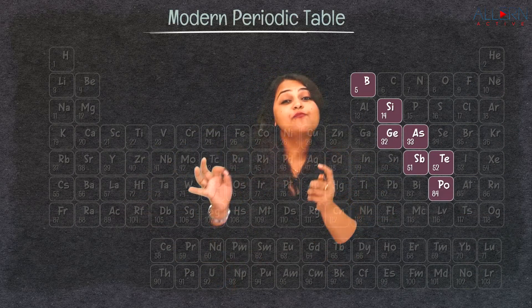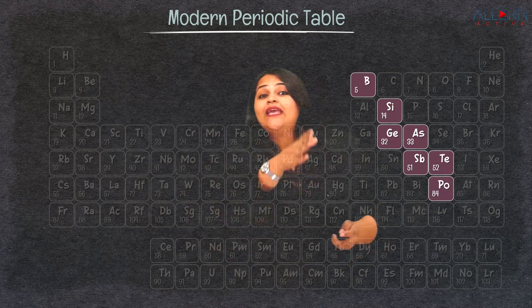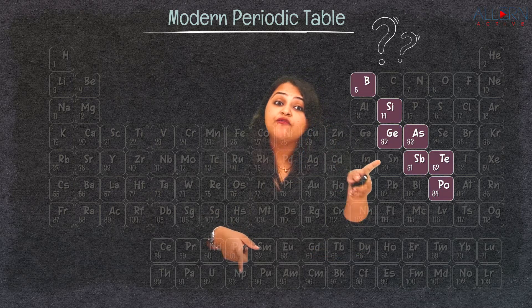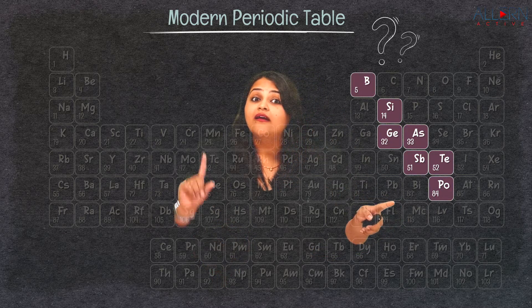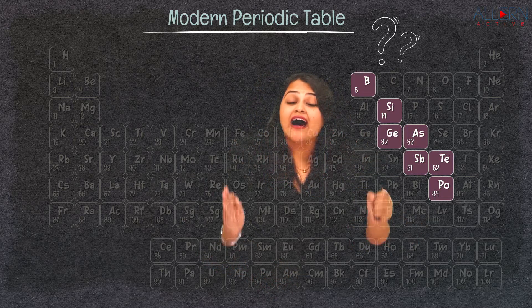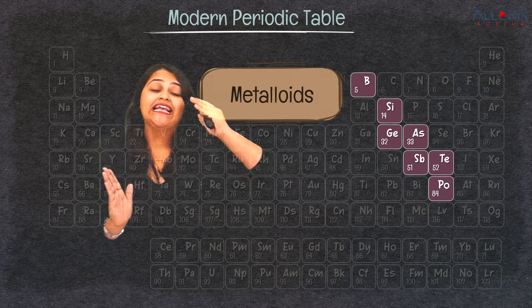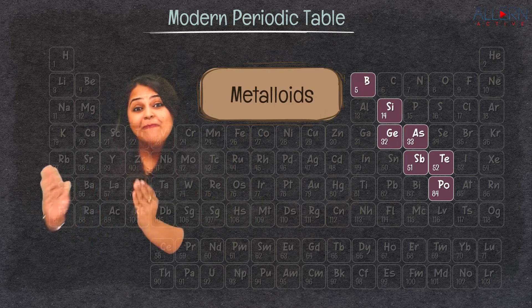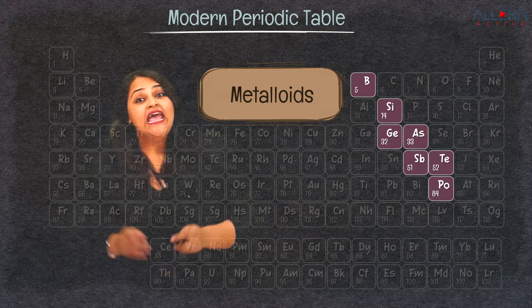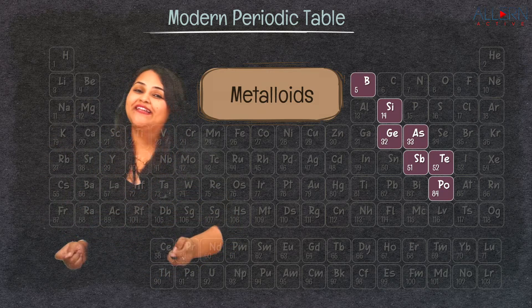That is how the modern periodic table was classified by Mendeleev. There was a question about what these elements were, so he put forth the idea of placing metalloids in between to clearly divide metals on one side and non-metals on the other. That is how the modern periodic table was fully complete.